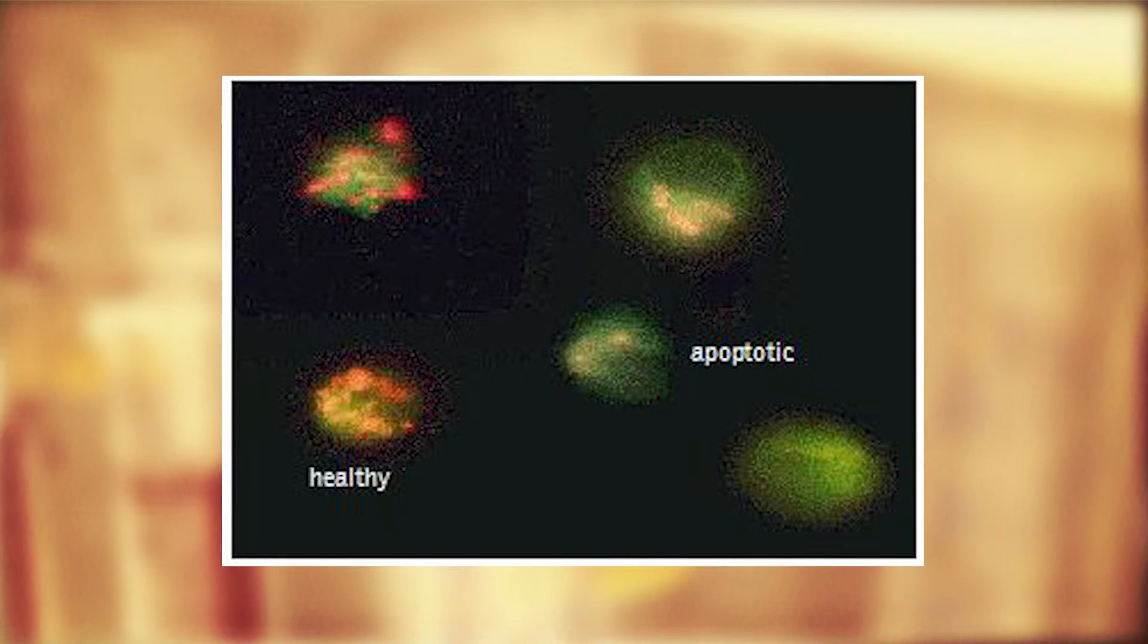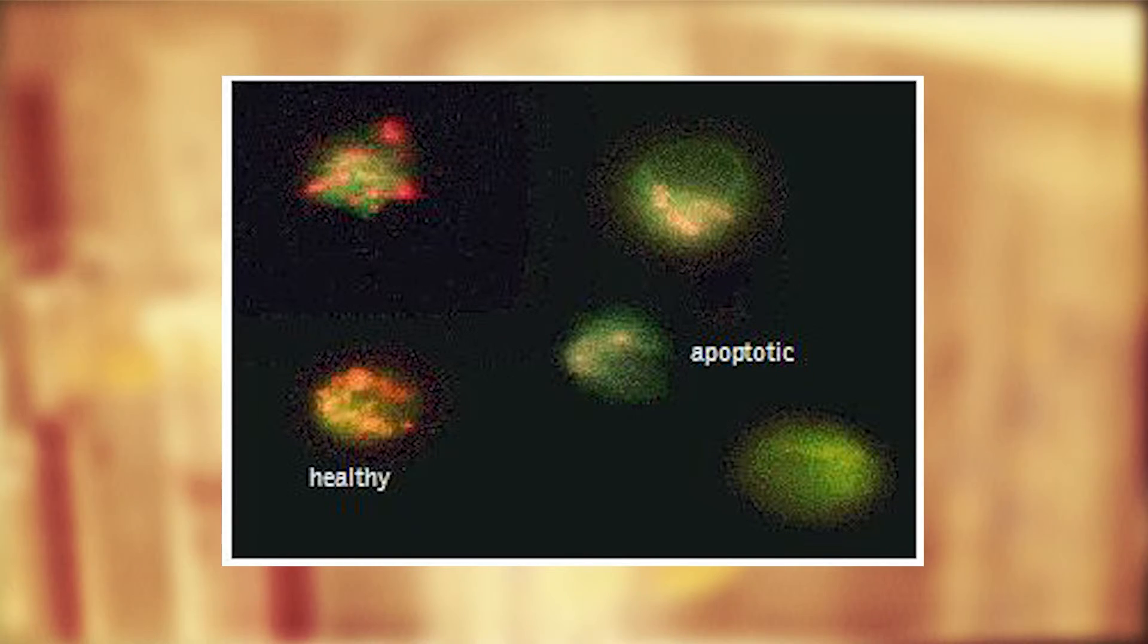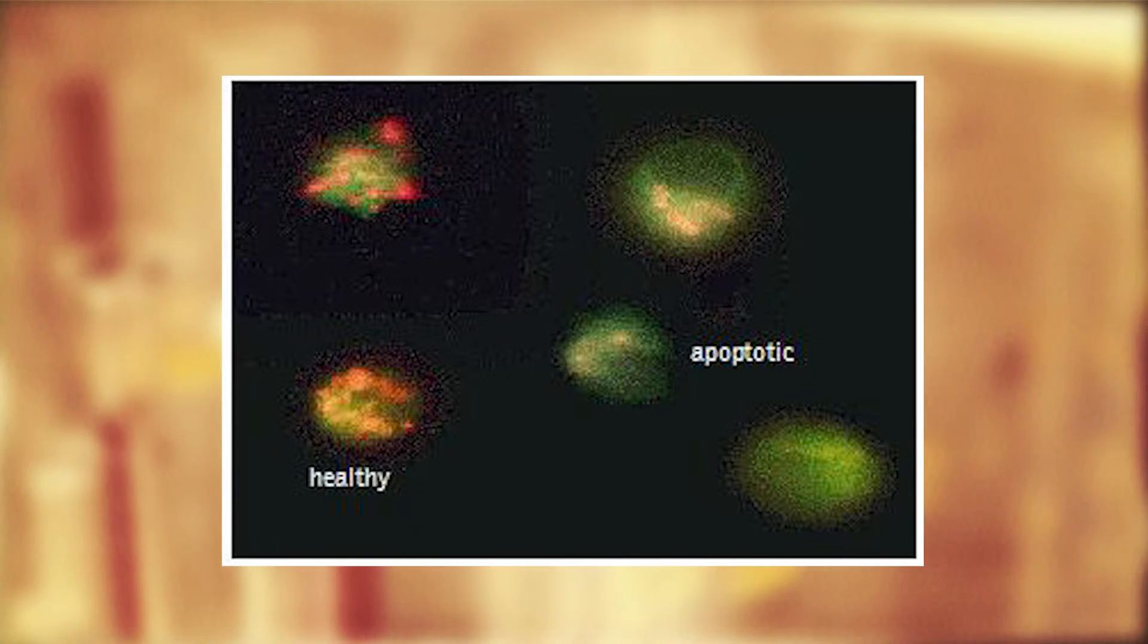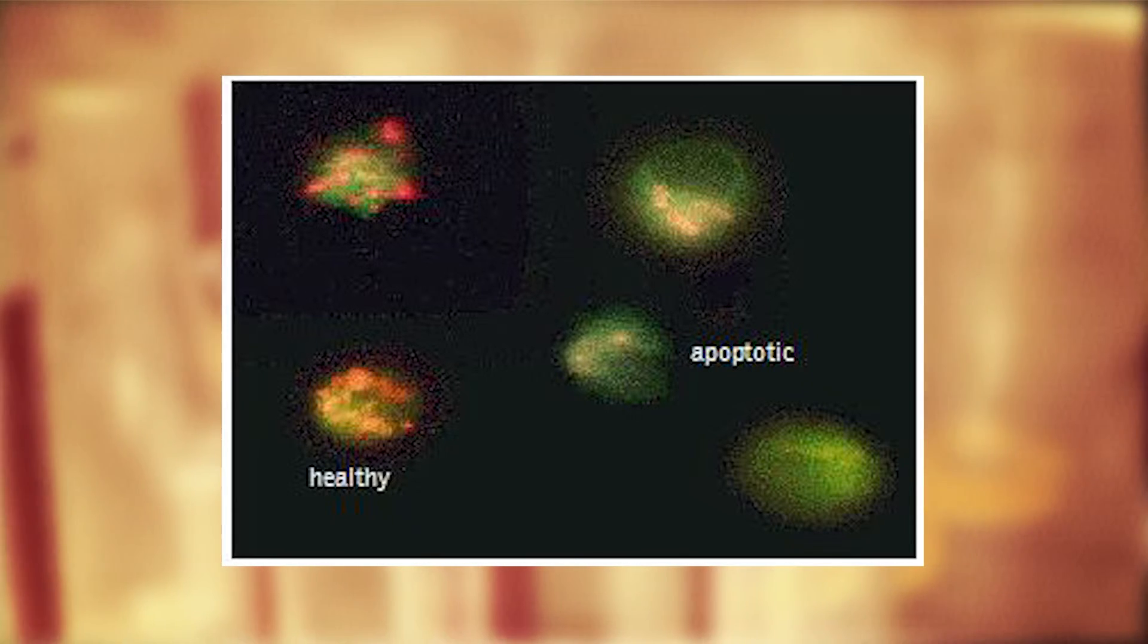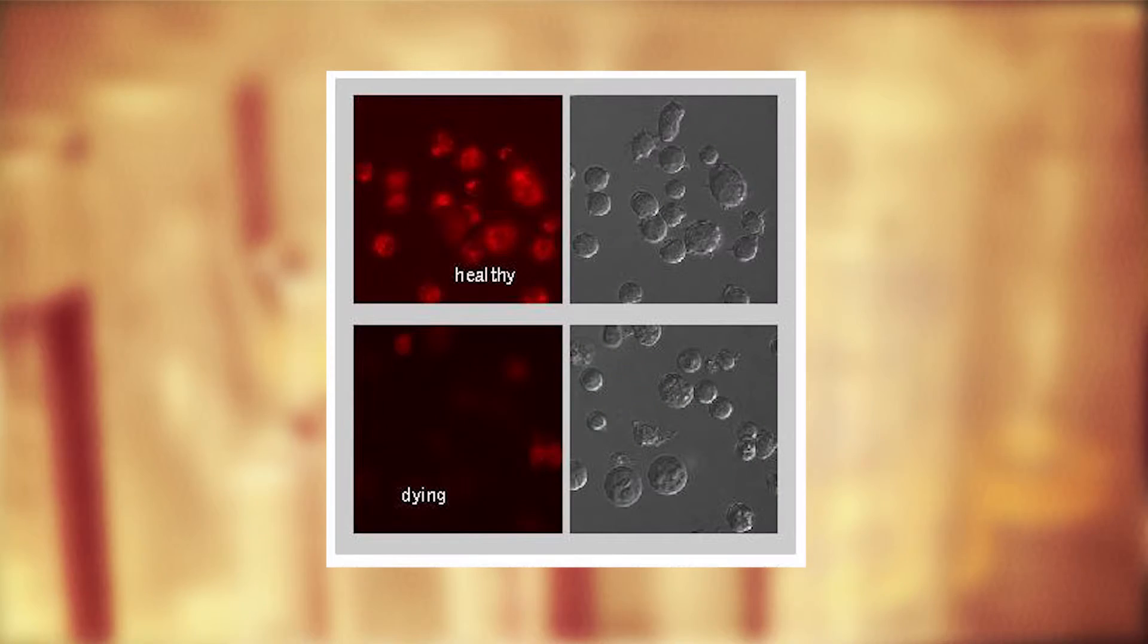In healthy non-apoptotic cells with polarized mitochondrial membranes, mito-PT reagents will accumulate inside the negatively charged mitochondria and fluoresce bright red or orange upon excitation.